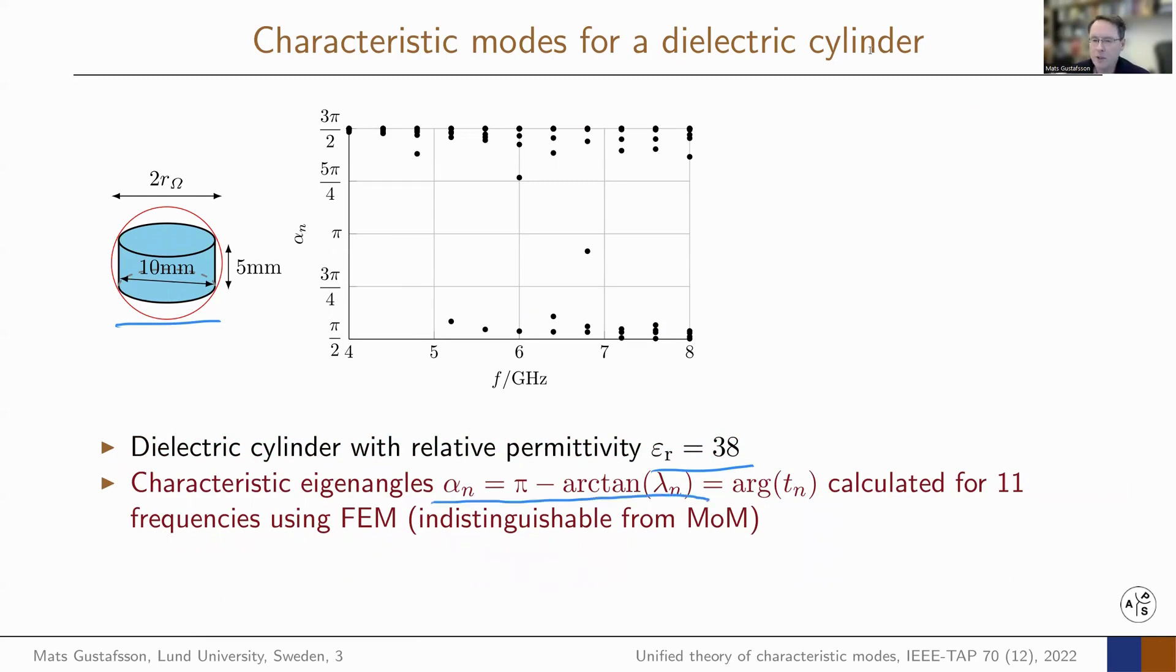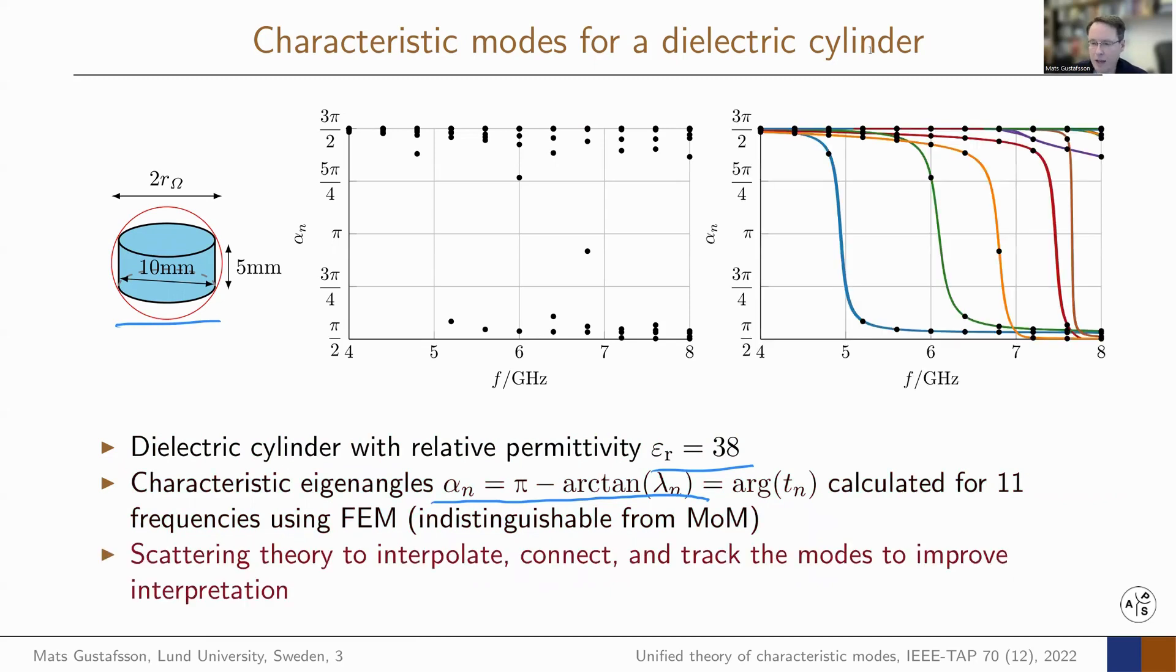We can now use scattering theory, and we can actually interpolate, track, and connect this. From these 11 points, you get the full data, and you can see how the modes develop with frequency. For example, you can find the resonances sitting up here.